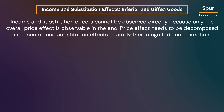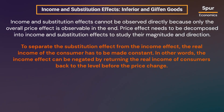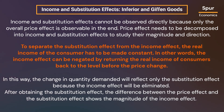Income and substitution effects cannot be observed directly because only the overall price effect is observable. Price effect needs to be decomposed into income and substitution effects to study their magnitude and direction. To separate the substitution effect from the income effect, the real income of the consumer has to be made constant. In other words, the income effect can be negated by returning the real income of consumers back to the level before the price change. In this way, the change in quantity demanded will reflect only the substitution effect. After obtaining the substitution effect, the difference between the price effect and the substitution effect shows the magnitude of the income effect.